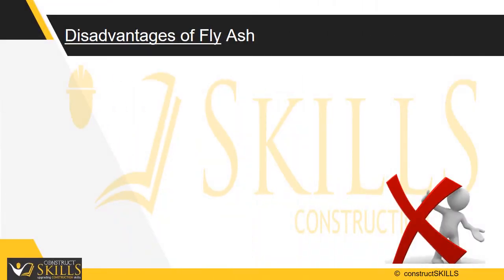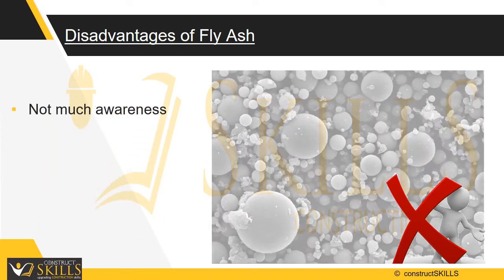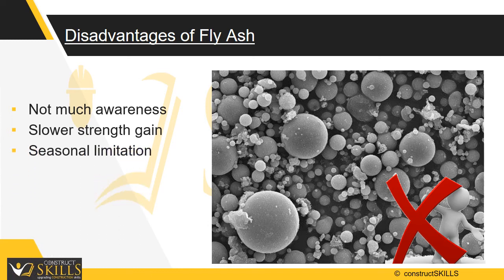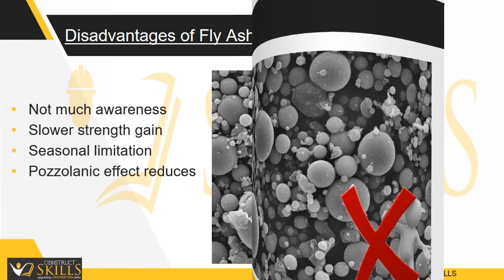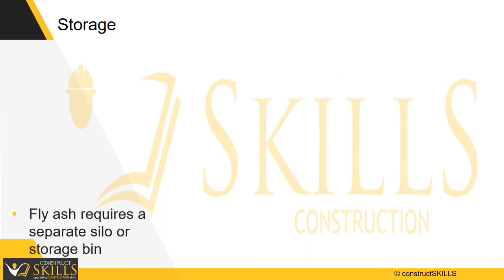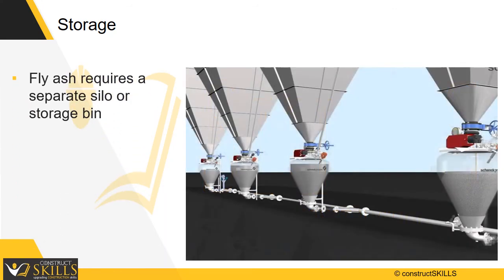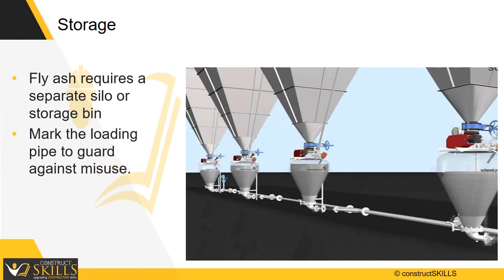The concerns or disadvantages about using fly ash in concrete include: small builders and housing contractors may not be familiar with fly ash concrete properties. The concrete gains strength more slowly, which leads to delays in removal of shuttering. There is also a seasonal limitation of availability — in winter months, the pozzolanic effect reduces. For storage, fly ash requires a separate silo or storage bin. After collecting the concrete, take care and clearly mark the loading pipe to guard against misuse in concrete.